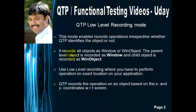The second key point is that low level recording mode records all objects as Window or Win objects. The parent level objects are recognized as Window, and the child objects are recognized as Win objects.